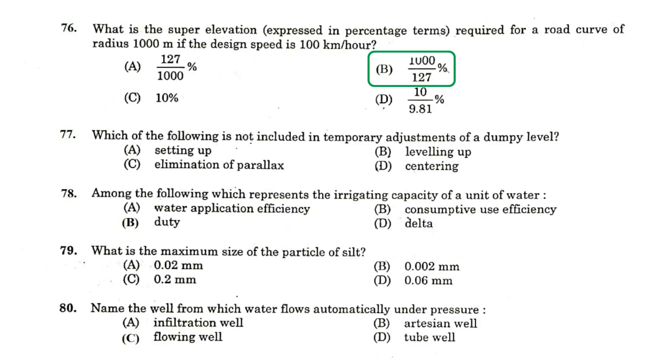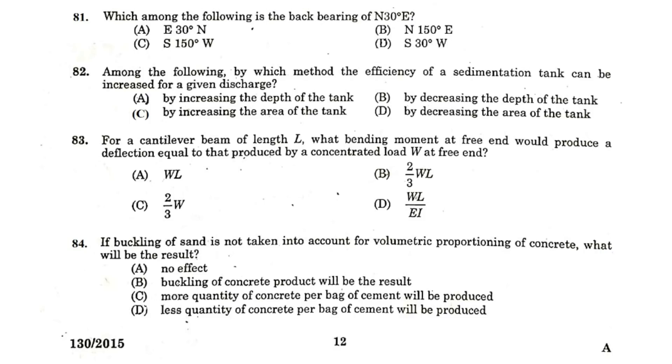Which of the following is not included in temporary adjustment of a dumpy level? Centering. Among the following which represent the irrigation capacity of a unit of water? Duty. What is the maximum size of a particle of silt? 0.002 mm. Name the well from which water flows automatically under pressure. Flowing Well.